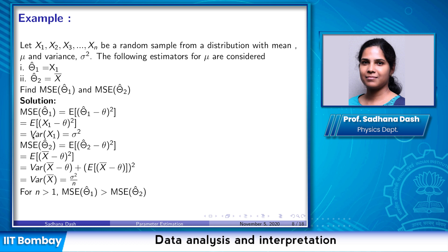Simple example: let x1, x2, ..., xn be a random sample from a distribution with mean mu and variance sigma-squared. Two estimators of mu are proposed: x1 alone, and the sample mean. Using the standard definition of MSE, for x1 the MSE comes out to be sigma-squared, and for the sample mean it is sigma-squared divided by n. For n greater than 1, the second is always less than the first, so the sample mean is a better estimator.